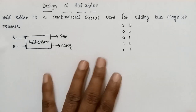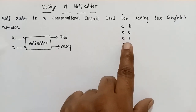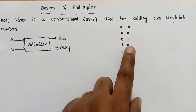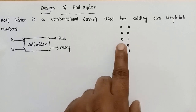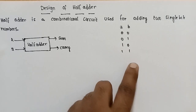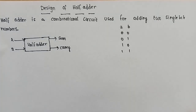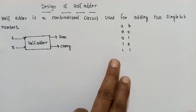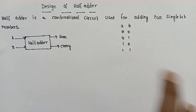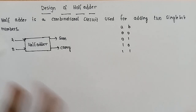The half adder is a combinational circuit used for adding two single-bit numbers. A and B are each single bits. A and B values are 0 and 1. There are two input combinations. The half adder compares two inputs and produces a combination of outputs.